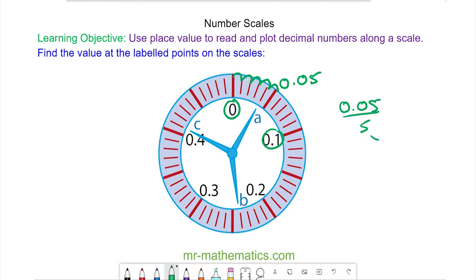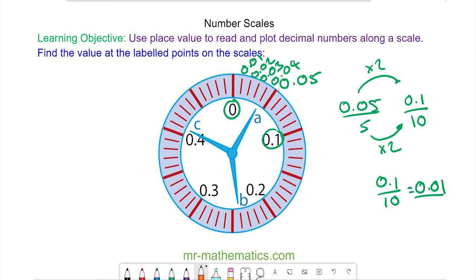To work out the value of each division we can use place value by writing as a fraction over 10. 5 times 2 makes 10, and 0.05 multiplied by 2 is 0.1. So each of these divisions is worth 1 hundredth, so we can work out the value of a as 0.04.